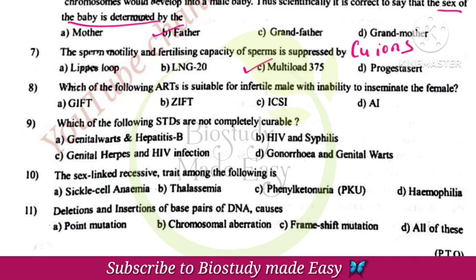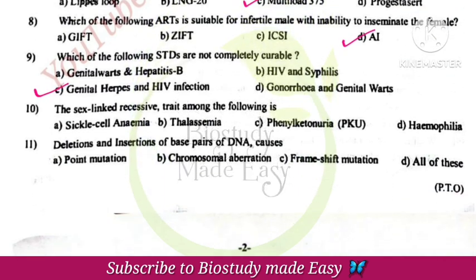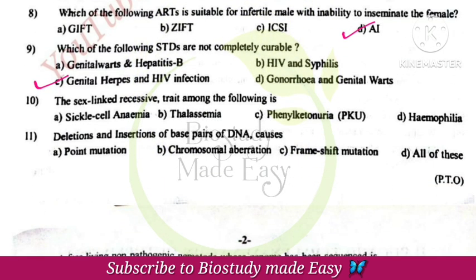Artificial insemination will be suitable for infertile males with inability to inseminate the female. Which of the following STDs are not completely curable? Genital herpes and HIV infection.